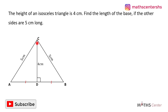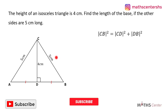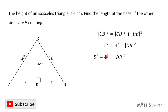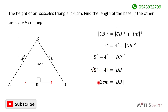We form the right angle triangle CDB and apply the Pythagorean theorem to find the length of side DB. From the Pythagorean theorem, the square of CB equals the square of CD plus the square of DB. CB is 5 cm and CD is 4 cm, so 5 squared equals 4 squared plus DB squared. Rearranging, 5 squared minus 4 squared equals DB squared.